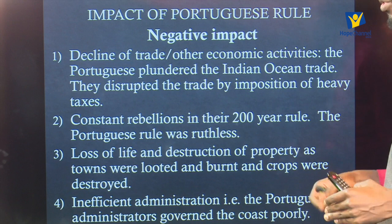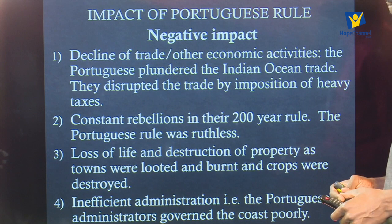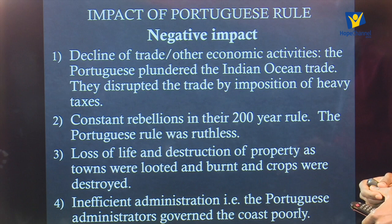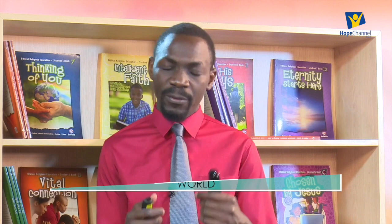Number four, there was an inefficient administration. The Portuguese administrators governed the coast poorly — they were not able to cover large areas or entrench their rule in a good way. So there was inefficient administration; people didn't really feel like the Portuguese were carrying out their rule in the right way.